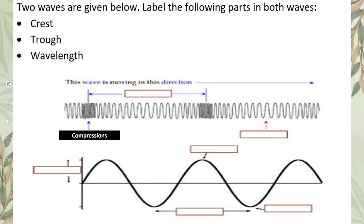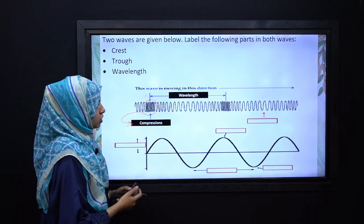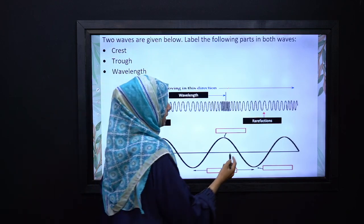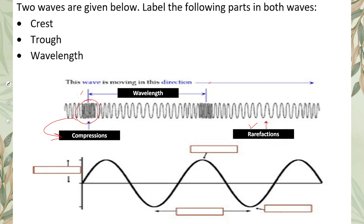The denser part, that is compression. The distance between two compressions or rarefactions, we learned in the previous lecture, is known as wavelength. And the less dense part, we named it rarefaction.